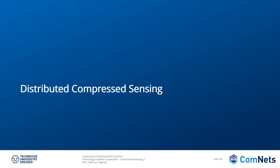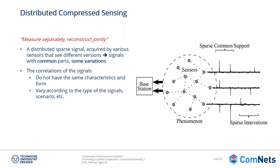Now we move to the part of distributed compressed sensing. You heard me saying there are temporal and spatial correlations within sensor networks. Previously, the approach was to take each signal from a specific sensor, compress it, send it, and the decoder reconstructs each signal from separate sensors separately. But the idea of distributed compressed sensing is that we measure separately — the sensors keep working on their own — but we do distributed compressed sensing in order to reconstruct jointly. This could also be beneficial to make the reconstruction even faster.